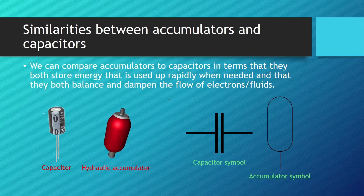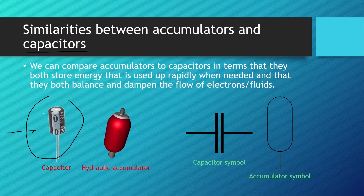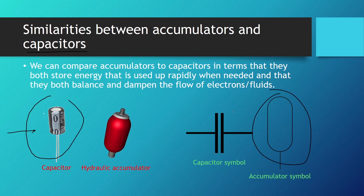If you know a little bit about electronics, you've probably learned about capacitors — battery-like components used to store electric energy in an electric field. We can draw a parallel between the similar tasks these two components perform. They are both reservoirs of energy that can be rapidly used by an energy consumer, and they both function as dampeners or filters — for the flow of electrons in the case of capacitors, and for the flow of hydraulic oil in the case of hydraulic accumulators. The symbol for hydraulic accumulators in hydraulic schematics can be seen here. In the resource section, I've left a great article comparing components from the electrical world with components used in hydraulic systems.